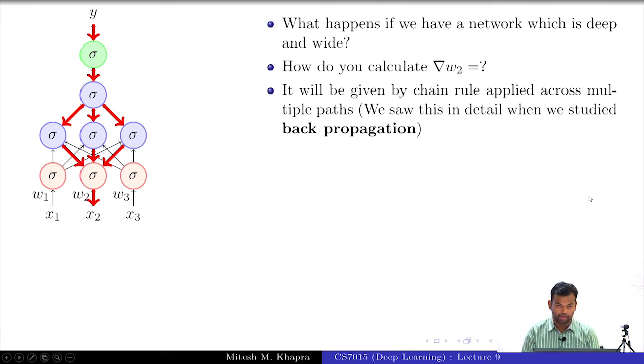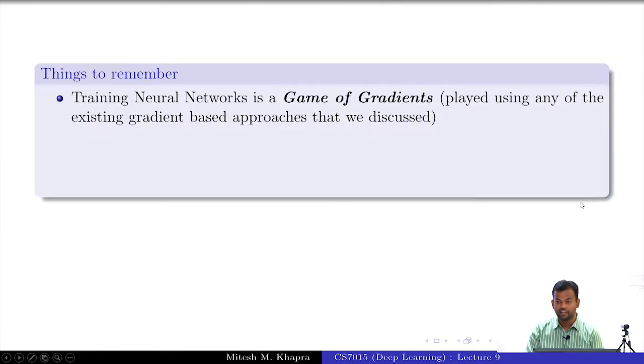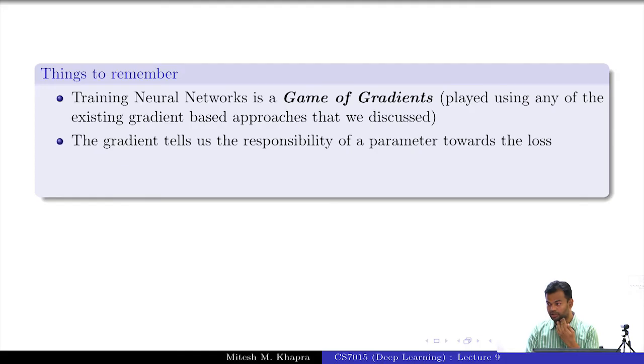Things to remember from what we have seen so far is that training neural networks is basically a game of gradients. You compute the gradients and everything depends on those, how will you update the weights and everything from there on is about the gradients. And these gradients actually tell you the responsibility of the parameters to the loss and you appropriately update them. And we saw various variants of how to use the gradient. So, we saw the gradient descent, we saw nag momentum and all. But in all of these the underlying core thing was to compute the gradient and then do some manipulations based on that.